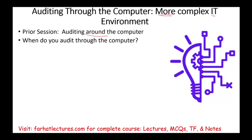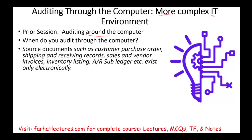What does that mean? It means the source documents for the accounting information system exist only electronically or mostly electronically. Source documents include customer purchase orders, shipping documents, receiving documents, sales and vendor invoices, and so on.